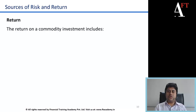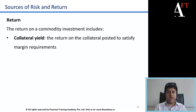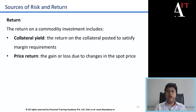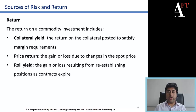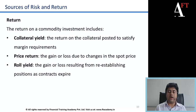The returns on a commodity investment consist of three components: the collateral yield, which is the return on the T-bill posted to satisfy margin requirements; the price return, which is the gain or loss due to changes in spot prices; and the roll yield, which is the gain or loss resulting from re-establishing positions as contracts expire. When rolling over a contract, you square off the old contract and take a fresh position at new prices.